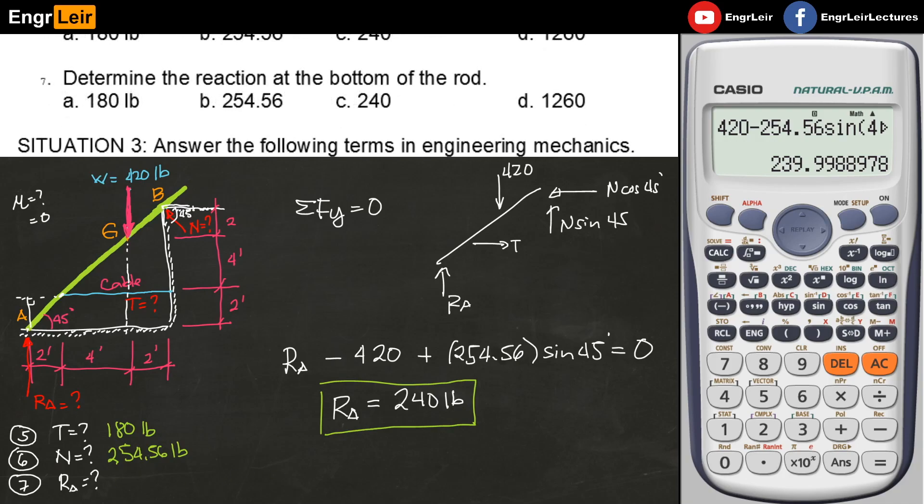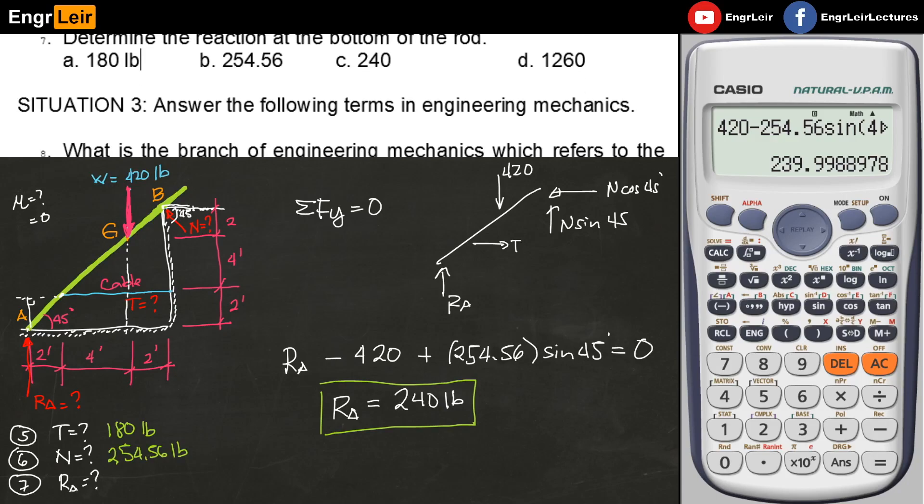Next problem. We're done with that. Situation 3 - answer the following terms in engineering mechanics. Very easy, just terms. So questions 7, 8, 9, and 10 will be about terms.